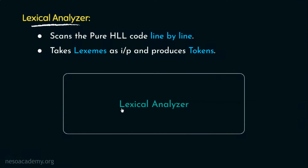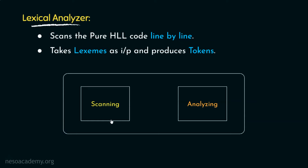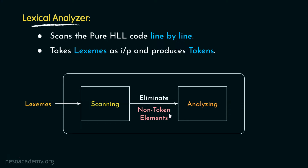In a lexical analyzer, two functions take place: first scanning, then analyzing. Lexemes are given to the scanning phase, which eliminates non-token elements such as comments and consecutive white spaces. Thereafter, in the analyzing phase, the actual processing happens and we get the tokens.